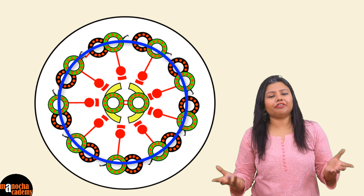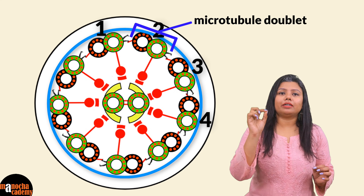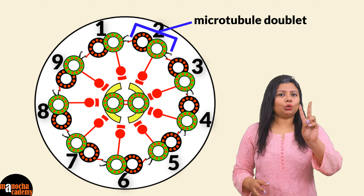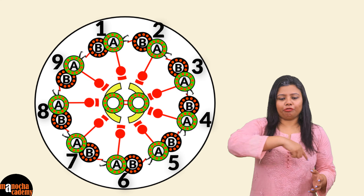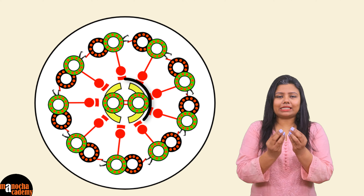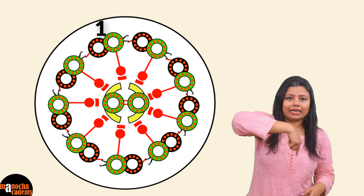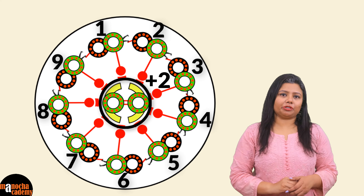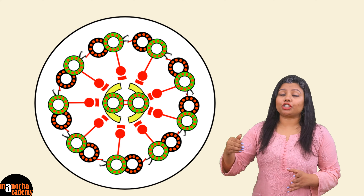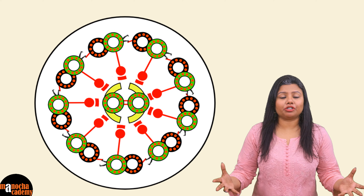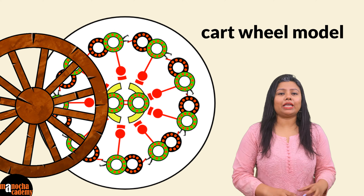The periphery of the cylindrical shaft is made up of nine doublets arranged in a circle — two types of tubulin protein, alpha and beta, forming a pair, with nine such pairs forming the peripheral circle. At the center, there are two tubulin proteins forming the central core or central hub. This gives the nine plus two arrangement of microtubules. To keep the microtubules attached to each other and to the central hub, a cart wheel model is formed.